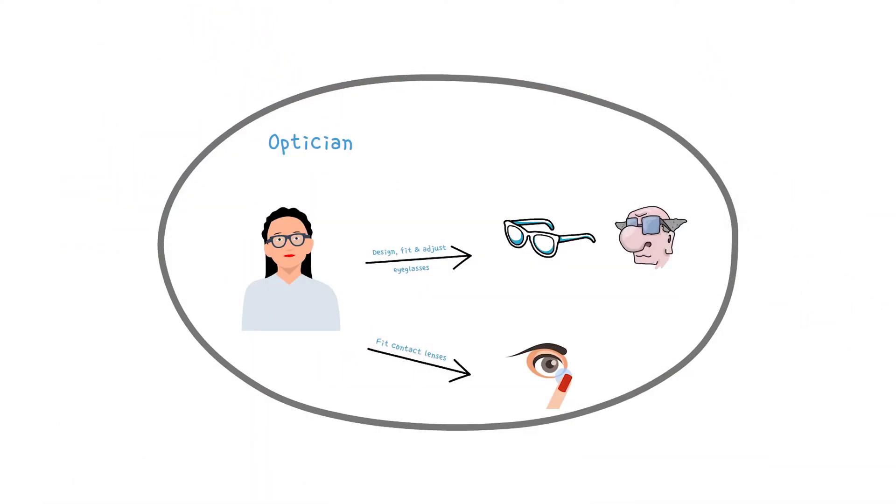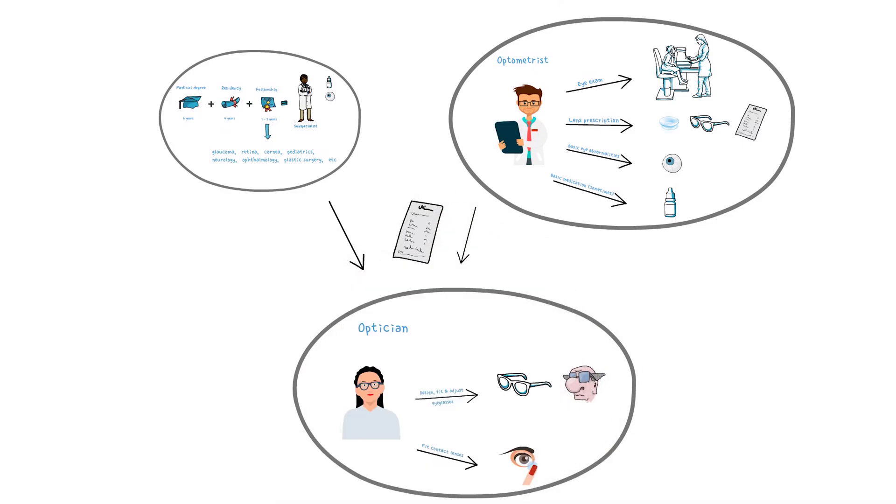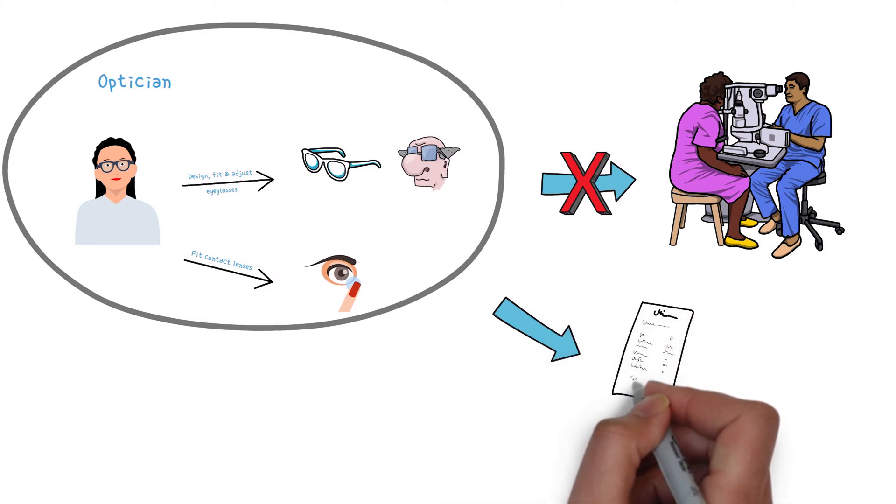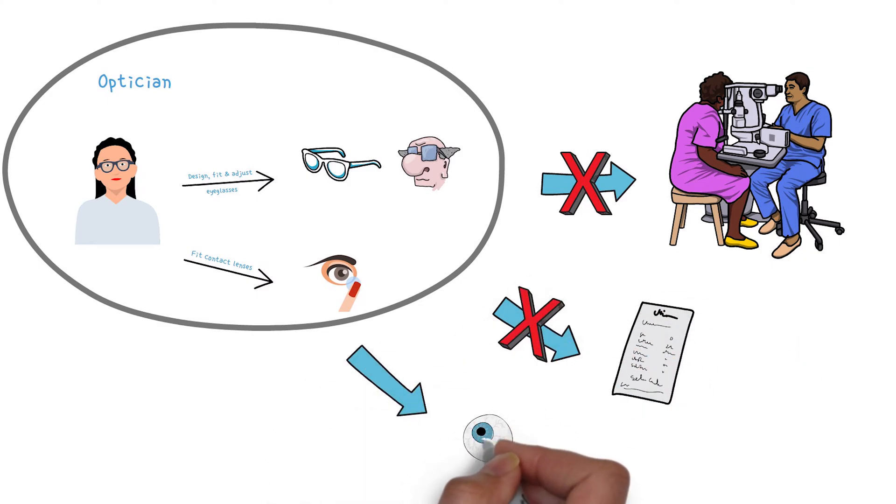They use prescriptions from an ophthalmologist or optometrist, but do not examine eyesight or prescribe vision correction. Opticians are not licensed to diagnose or treat eye diseases.